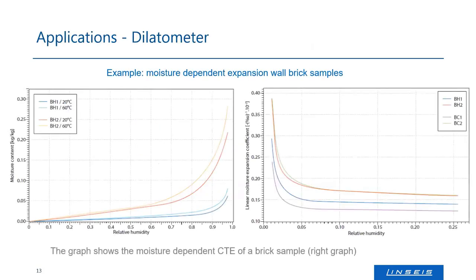The first application example was measured with a dilatometer to measure length change — expansion or shrinkage. Two different bricks for the building industry were measured. The curve on the right hand side is interesting: it shows the expansion coefficient at different relative humidities, and you can see that the expansion coefficient goes down with increasing relative humidity.